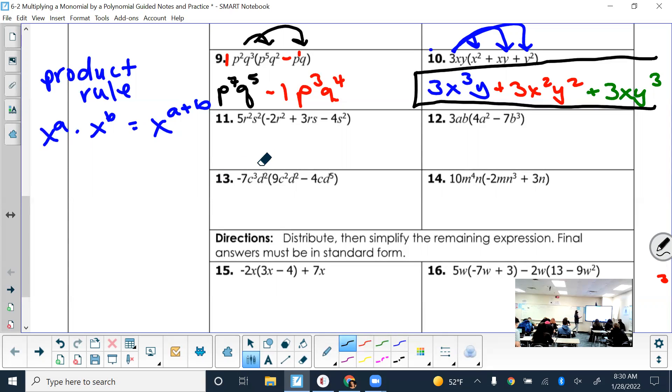I'll also have you try 13. So what's negative 7 times 9? Good. C cubed times c squared? D squared times d squared? D to the fourth. So that's the first term. Now multiply it by the second term in the parentheses. What's negative 7 times negative 4? And it's positive, so we'll put plus 28. C cubed times c? And d squared times d to the fifth. And then there's no like terms. It is written in standard form, so we're done.